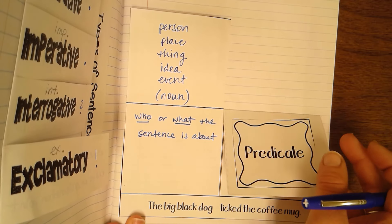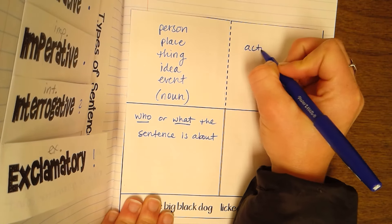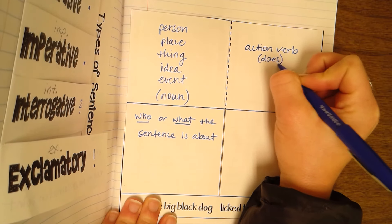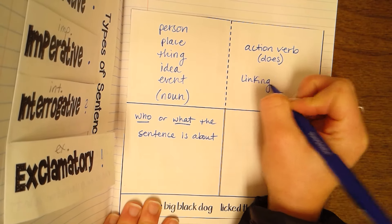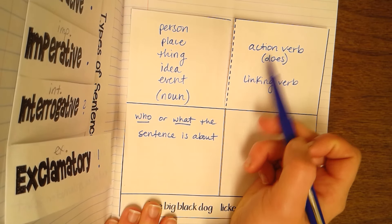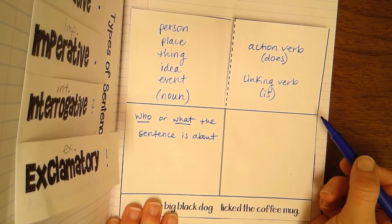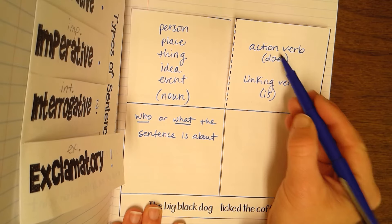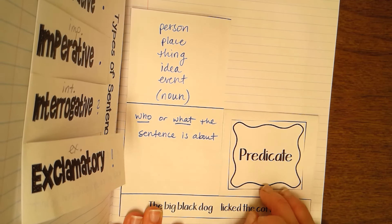Now we're going to flip over to the predicate side, so you may flip that tab up. Underneath that tab, we are going to write that it is the action verb. I'm going to write the word 'does' underneath because it's what the subject does — so the action that the subject does. You may also find the predicate is a linking verb, which aren't as obvious of verbs as action verbs. When you think of verbs, you think of action verbs. Linking verbs are saying the subject is or was doing something. The predicate is simply the verb that's going on in the sentence.